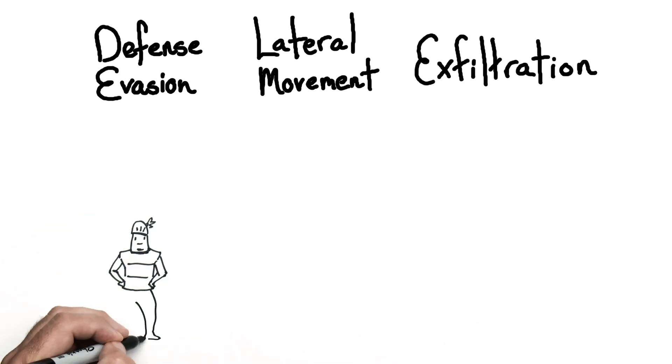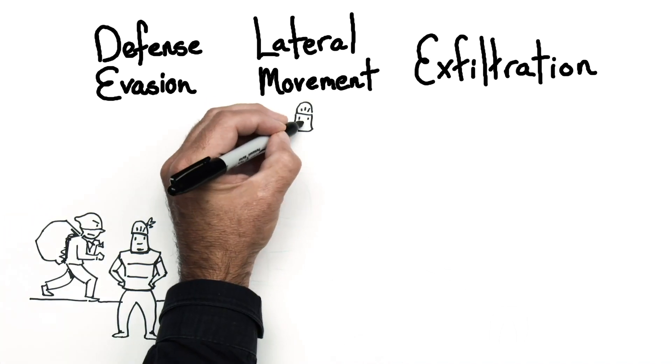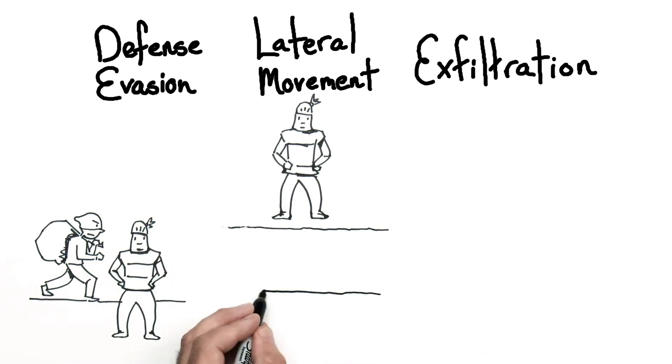Within each tactic category, ATT&CK defines a series of techniques. Each technique describes one way an adversary may try to achieve that objective.